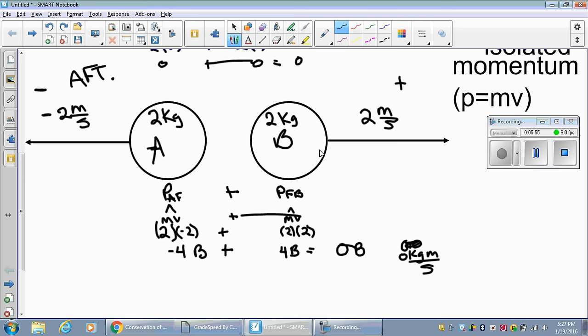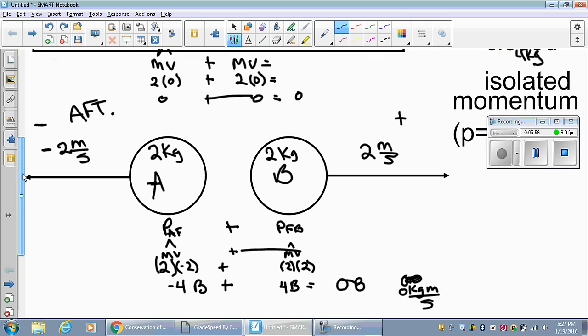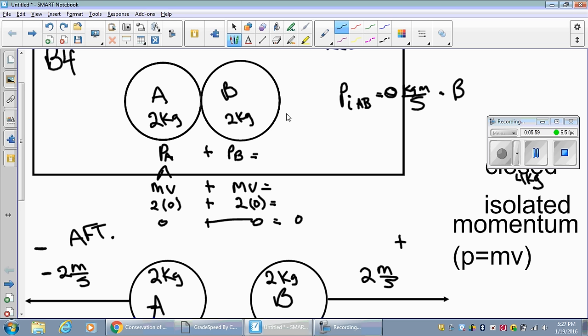Whether we're doing a recoil question or we're doing an inelastic collision where they stick together, you're going to find that you should always get the same momentum before and after. We're always going to have a before equals after sort of reaction. So this is the basis for all of our math for this chapter. This is the conservation momentum.